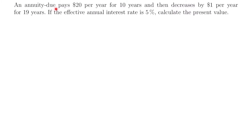Next example: an annuity due pays $20 per year for 10 years and then decreases by $1 per year for 19 years. If the effective annual interest rate is 5%, calculate the present value. This problem has a little more going on. We have level payments of $20 per year for the first 10 years, and then starting after year 10 the payments decrease by $1 each year for 19 years — a total of 29 years.